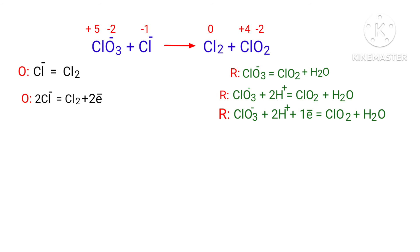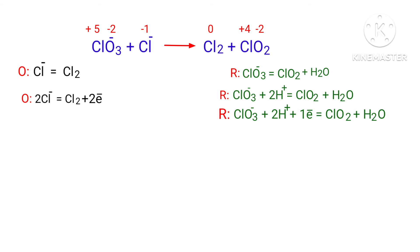Make electron gain equivalent to the electron lost. The electrons lost in the oxidation half reaction must equal the electrons gained in the reduction half reaction. In the oxidation half reaction there are two electrons, but in the reduction half reaction there is one electron. To equalize them, multiply the reduction half reaction by a coefficient of 2.